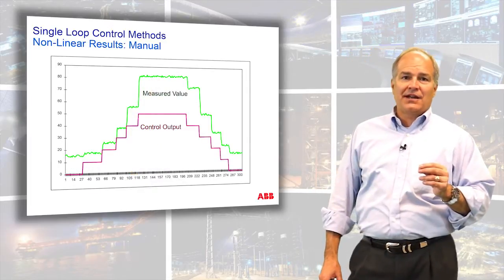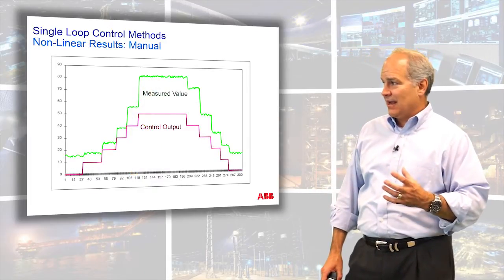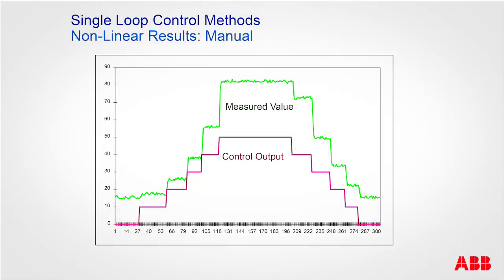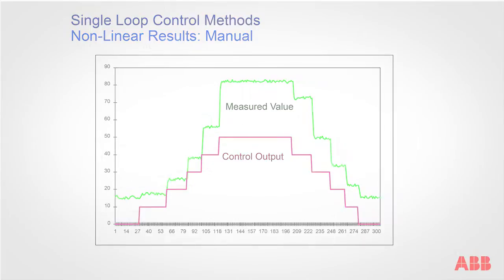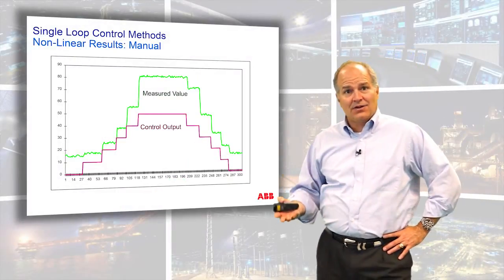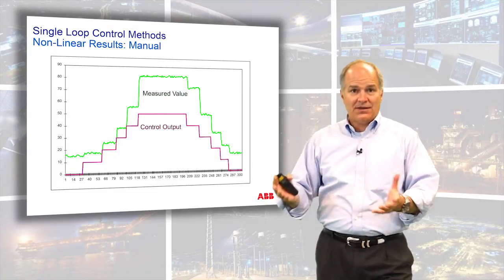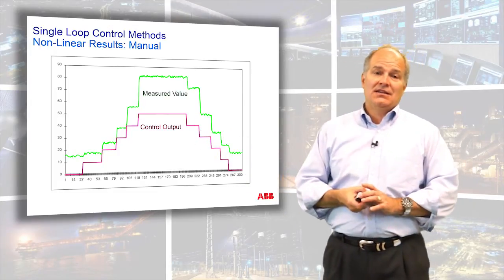Another nonlinearity can come in the process gain. Notice each of these steps in the output are the same size. Over here I made a change and it moved just a little bit; here it moved more, more, more, and then it moved a lot. So this is where we've got a nonlinear process gain. The process literally changes a different amount depending upon the same change in the actuation device.